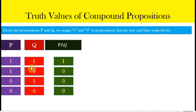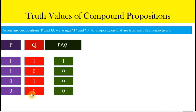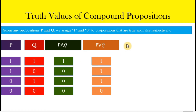Let us start with a simple example using two simple propositions. The conjunction p and q is only true if both of the conjuncts — both simple propositions — are also true. On any other combination of truth values, if one of them or both of them are false, then the entire conjunction becomes false. Remember: a conjunction is only true if both of the simple propositions are also true.